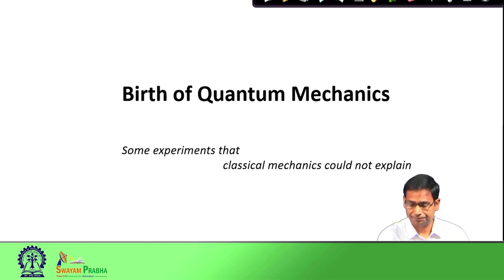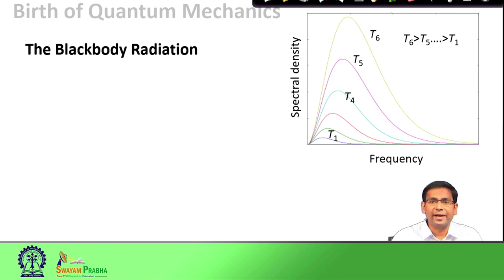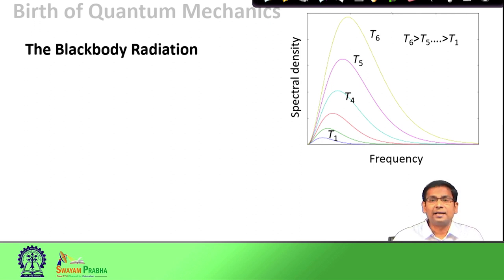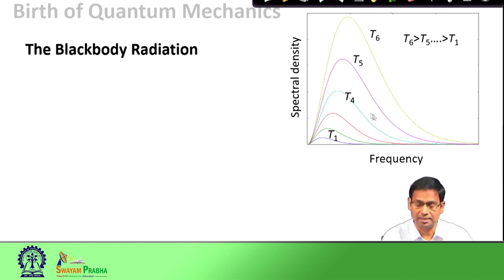Our first example is black body radiation. We all know that when we heat a substance, it emits radiation, and as we keep heating it more, the color of the radiation keeps changing. There exists an ideal body that absorbs and emits all radiations — this ideal body is called a black body, and the radiation it emits is called black body radiation. When one carries out experiments on this idealized body, one sees the spectral density as a function of frequency, as shown here.